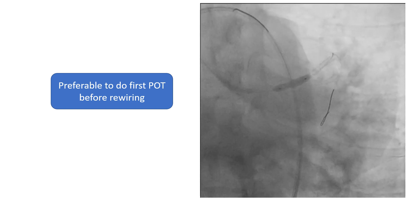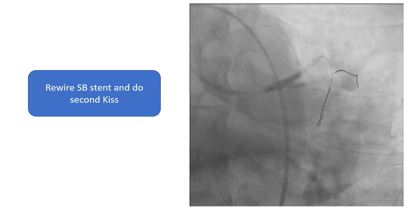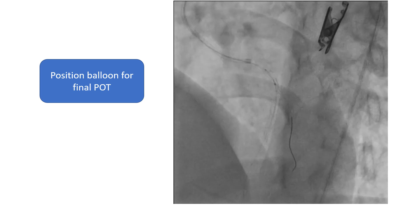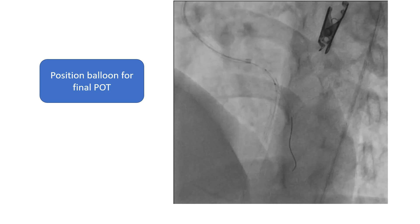It is preferable to deploy the first part of the main branch stent before rewiring. Then rewire the side branch and perform the second kissing balloon inflation. Now we come to the final POT. Positioning of the balloon for the final POT is very important. The final POT helps restore the round shape of the main branch, and by using an NC balloon with high pressure, it prevents malapposition. Localization is important — it should be just at the bifurcation and avoid the carina to prevent its distortion.